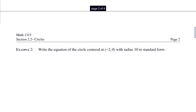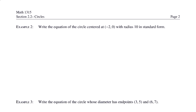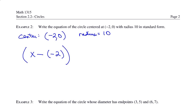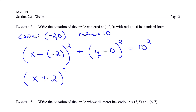In example 2, we want to write the equation of a circle centered at negative 2 comma 0 with radius 10 in standard form. The center is negative 2 comma 0 and the radius is 10. So this would be x minus negative 2 quantity squared plus y minus 0 quantity squared equals 10 squared. Simplifying, x minus negative 2 is written as x plus 2 quantity squared, y minus 0 is just y squared, and 10 squared is 100.